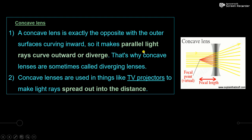A concave lens is exactly opposite to the convex lens. Here we find that the outer surfaces are curved inwards, which makes the parallel light rays curve outward — they diverge or spread. That is why a concave lens is called a diverging lens. Concave lenses are used in TV projectors to make the light rays spread out into the distance.